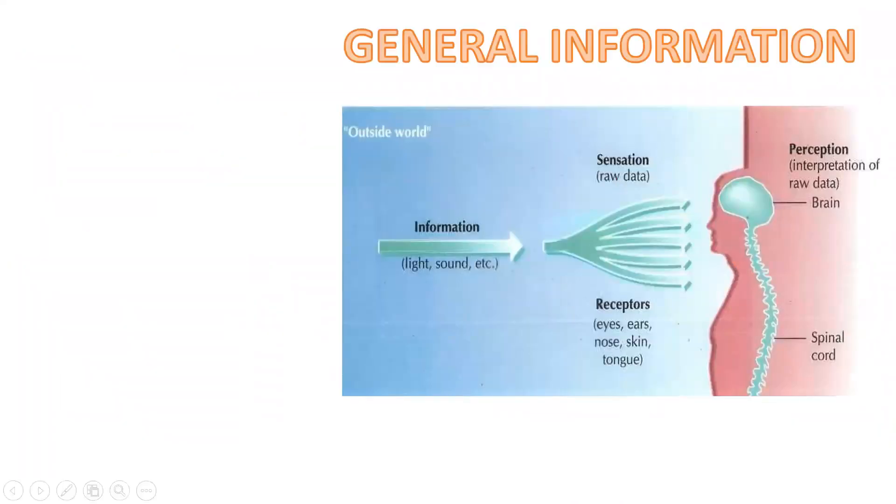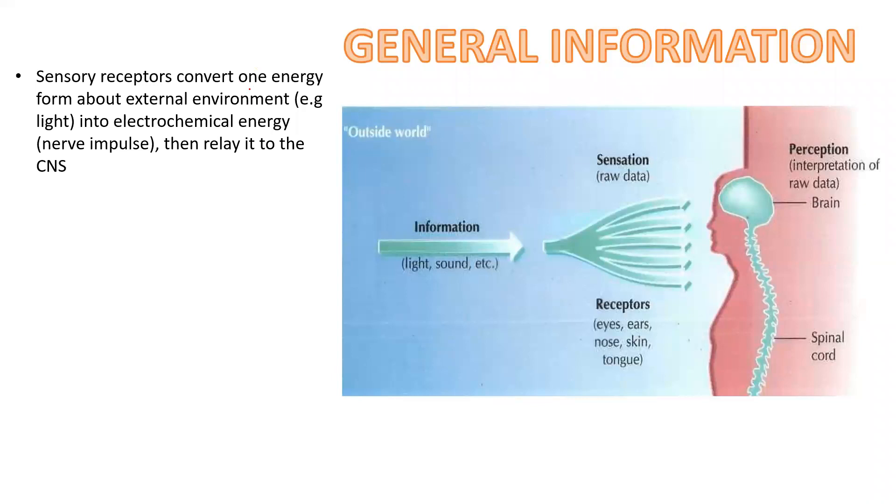Let's go through the general concept here. Sensory receptors convert one form of energy about the external environment, like light, into an electrochemical impulse that gets relayed to the central nervous system. So here's my information. It gets converted from our receptors into an electrochemical impulse that then gets perceived in our brain.